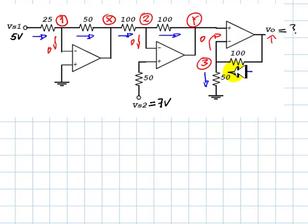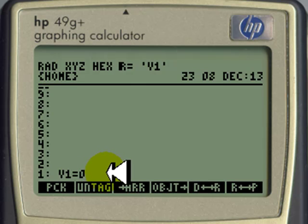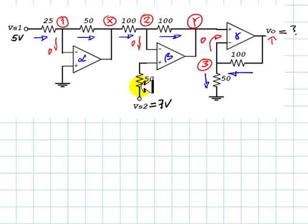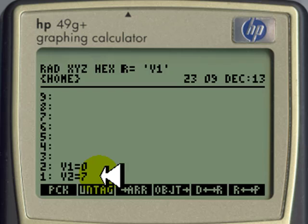Let's write first the negative feedback equations, one for op-amp alpha, another for beta and another for gamma. V1 is 0. This current is 0 amps, so the voltage Vp here is 7 volts as well. So this negative feedback equation for op-amp beta is V2 is 7 volts.